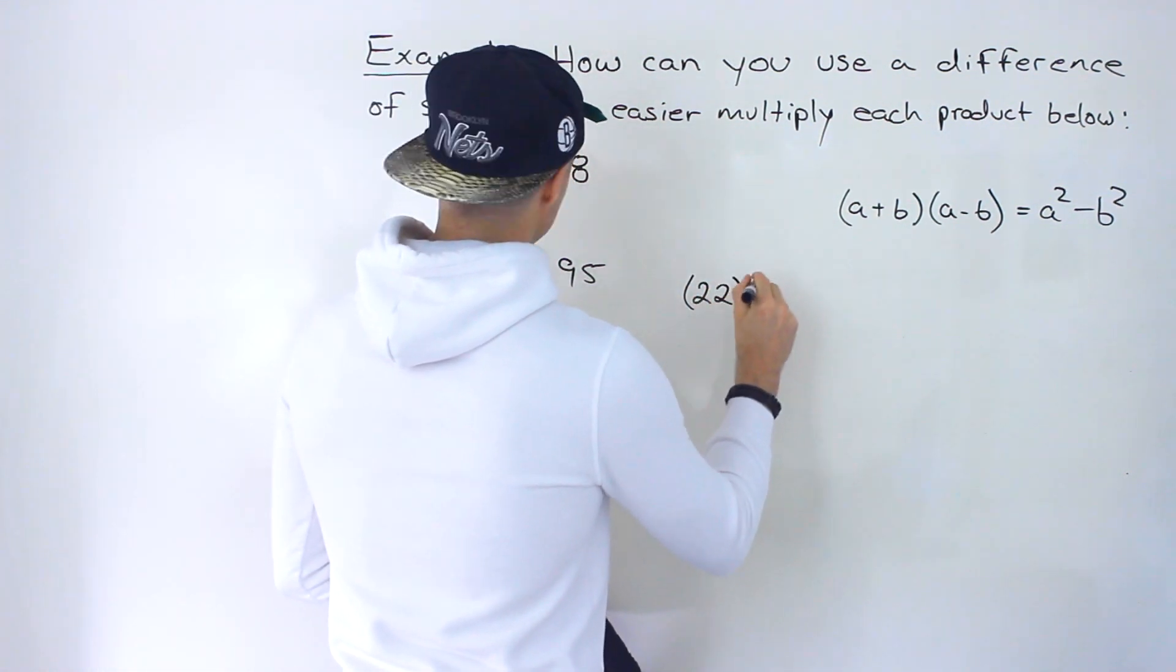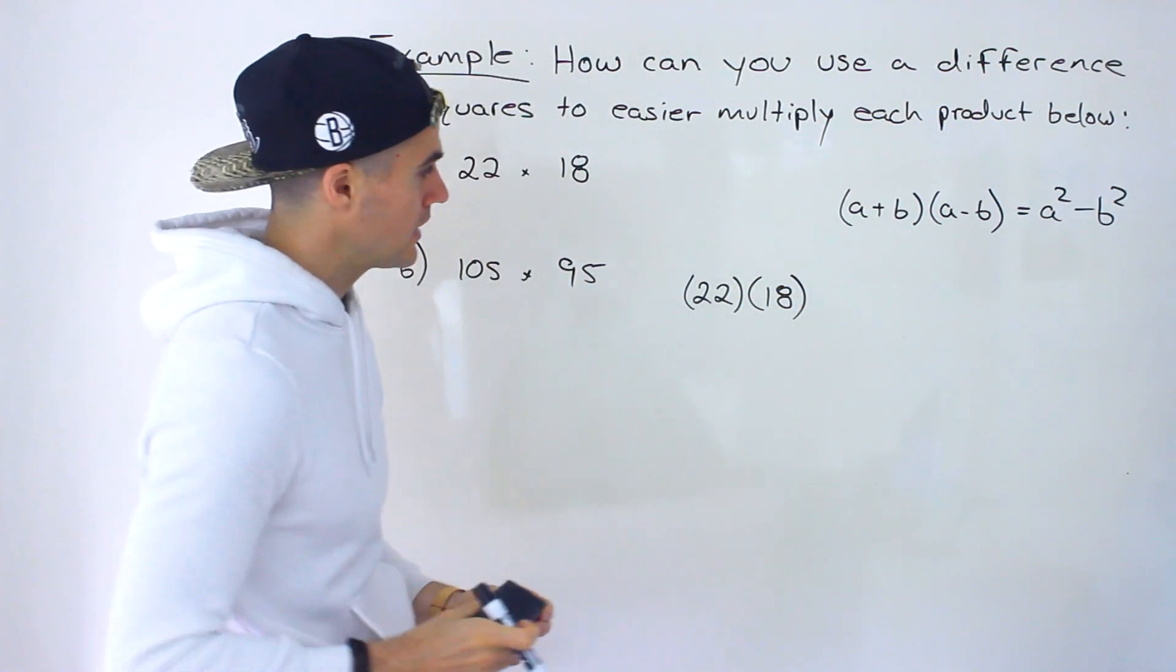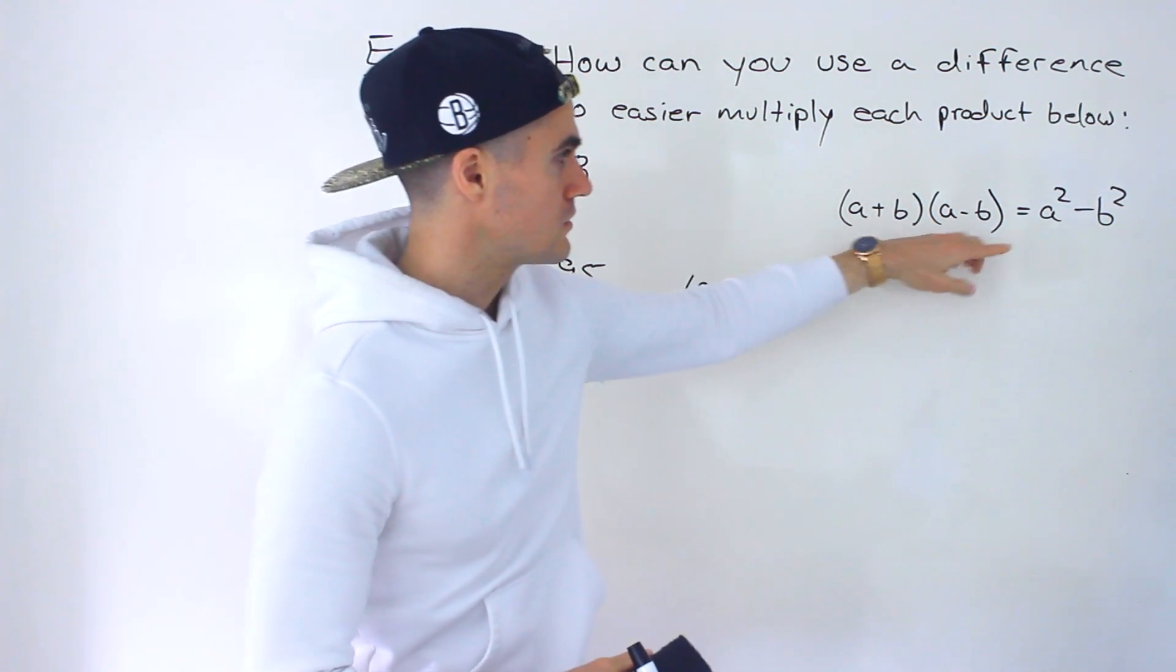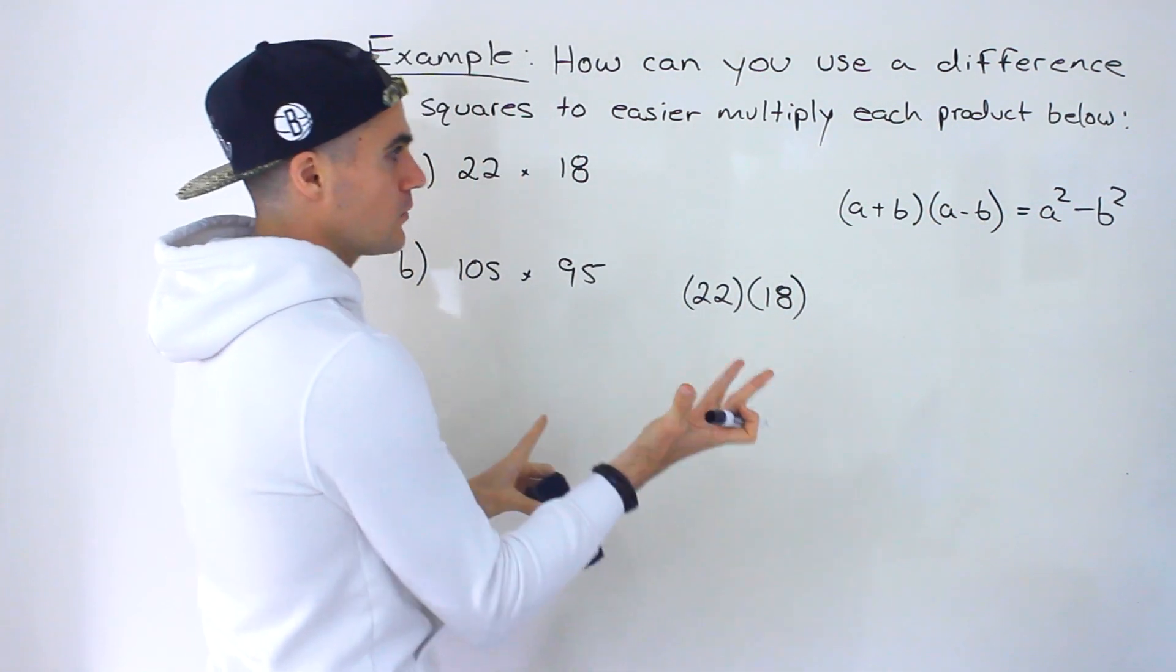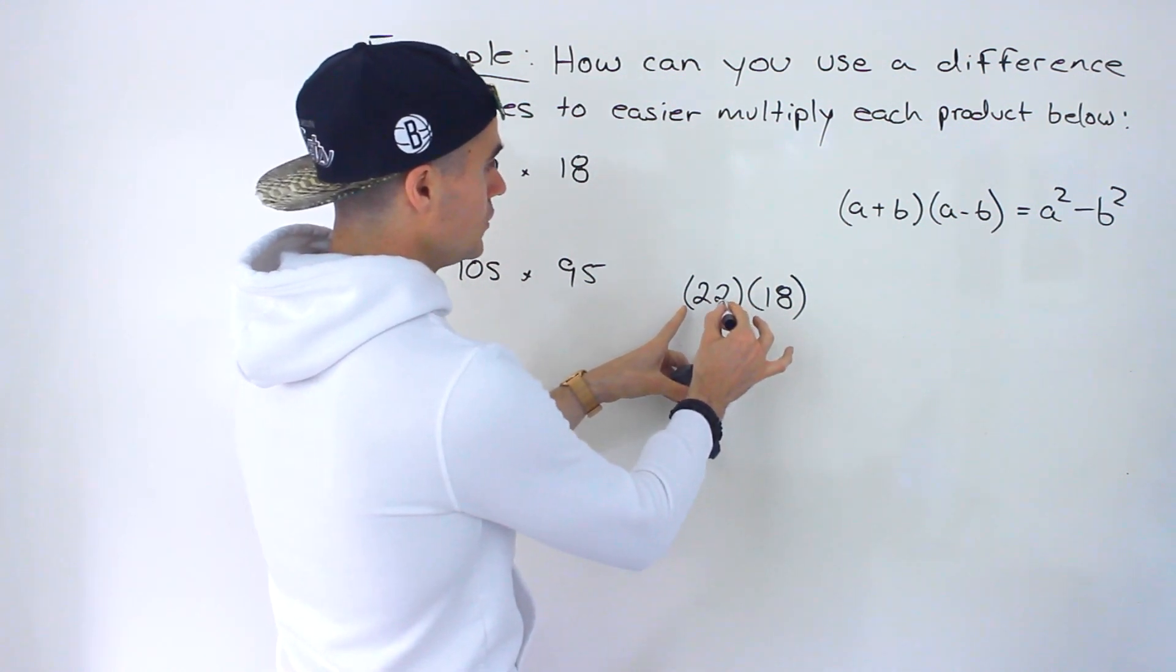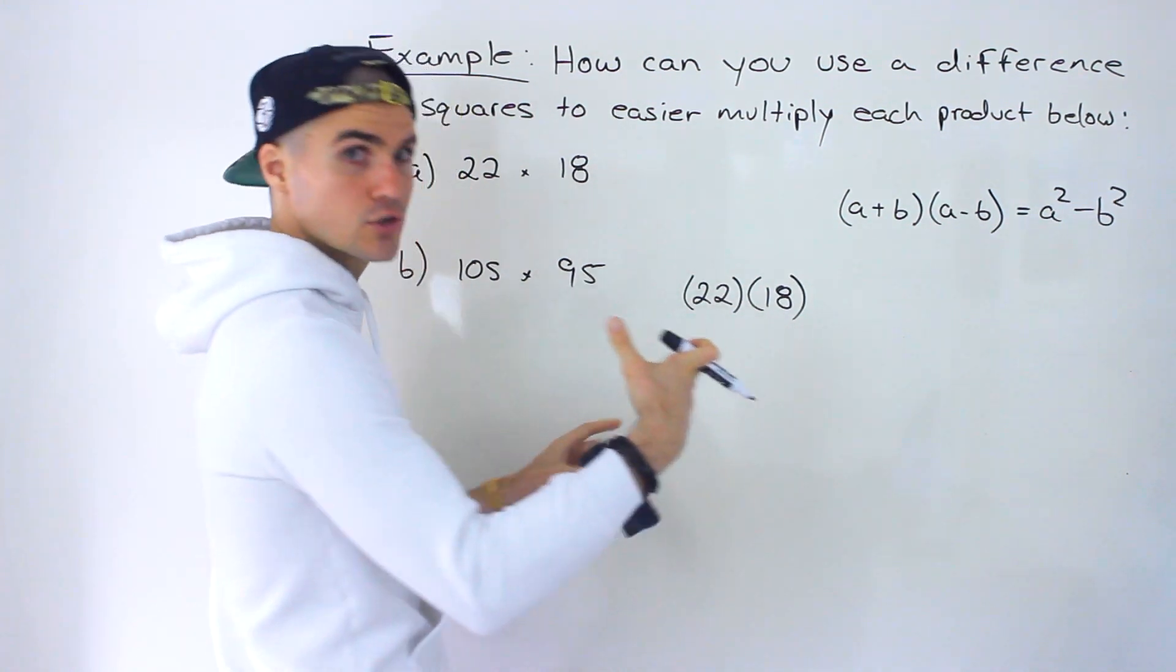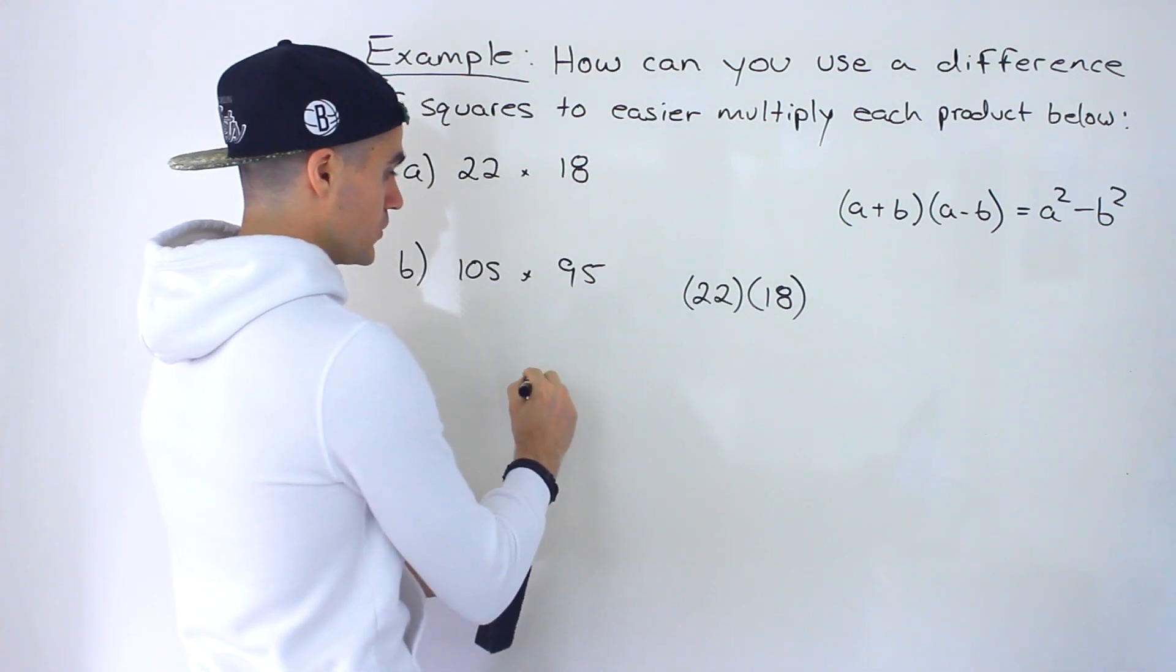We'll have 22 times 18 in brackets. What you want to do is you want to try to take this and write it in this kind of format, so then you could simplify it to that. As I said this is pretty weird but the way you do that is you want to find what the midpoint between these is. So 22 and 18 what you could do is you could add them together which would be 40 divided by 2 would give us 20.